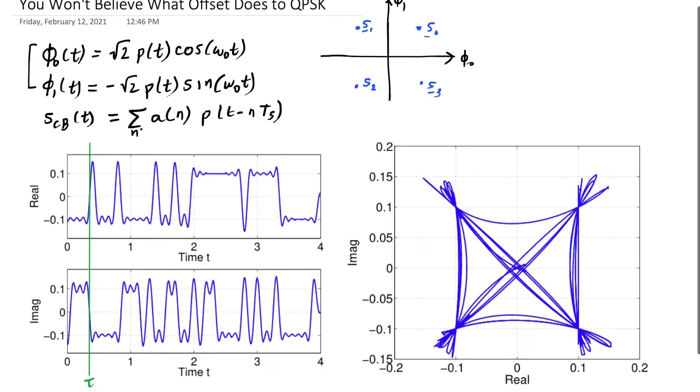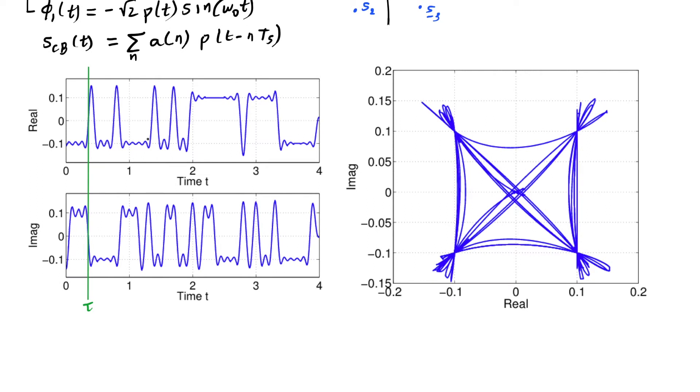So what does that look like? On a time plot here on the left, you can see the real and imaginary part of QPSK. We've gone over this before. This is using a square root raised cosine pulse shape. It has randomly selected symbols over a period of time.